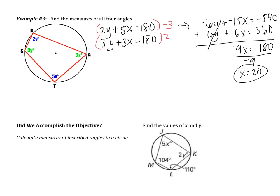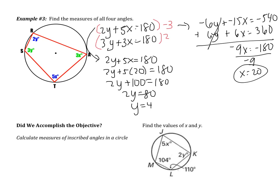Now to find Y, I have to substitute back in. I'm going to use the top equation. So rewriting, I have 2Y plus 5X equals 180. So 2Y plus 5 multiplied by 20 equals 180. I have 2Y plus 100 equals 180. Subtracting 100, I get 2Y equals 80. Dividing by 2, I get Y equals 40.